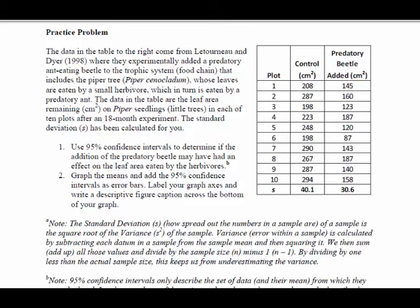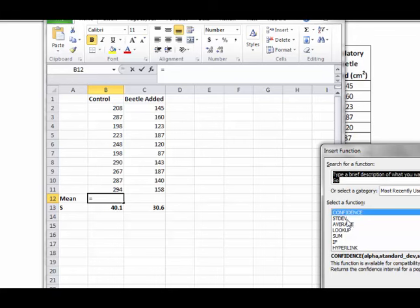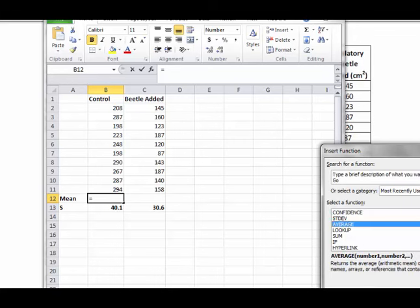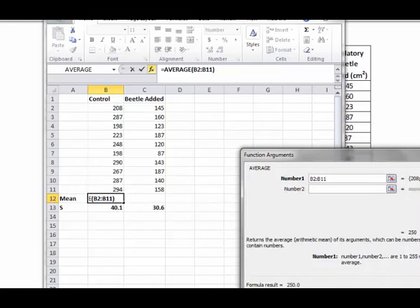So I like to use Microsoft Excel to do some of these calculations for me. I can show you how to use Excel to do some of these calculations. You can take out your calculator, and you can add up all these numbers and divide by the total number in the sample, which I believe was 10. I'm just going to let Excel do it for me by coming up here to this button and choosing average because that's what mean is, is the average. And then I'm going to highlight the numbers I want the mean of. And then there's this cool little thing I can do where I can drag this over, and it does it in this other box. And so, voila, I have two means. I have a mean for the control, and I have a mean for the beetle added area.